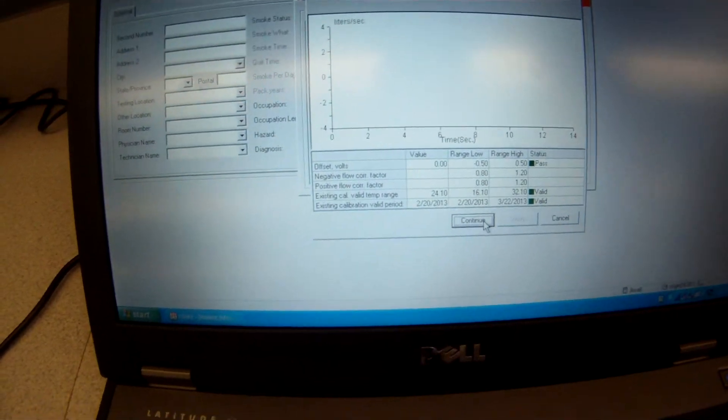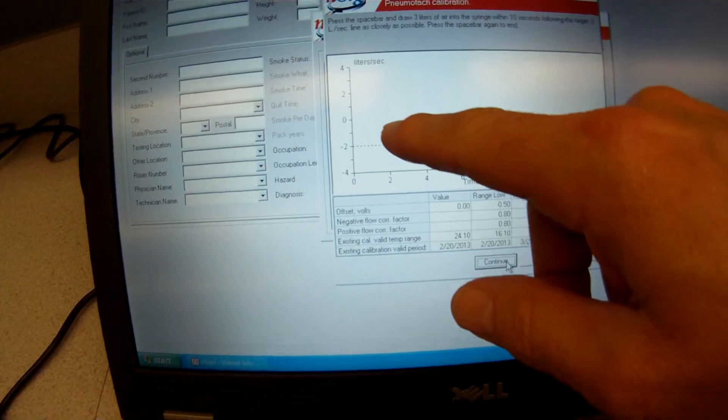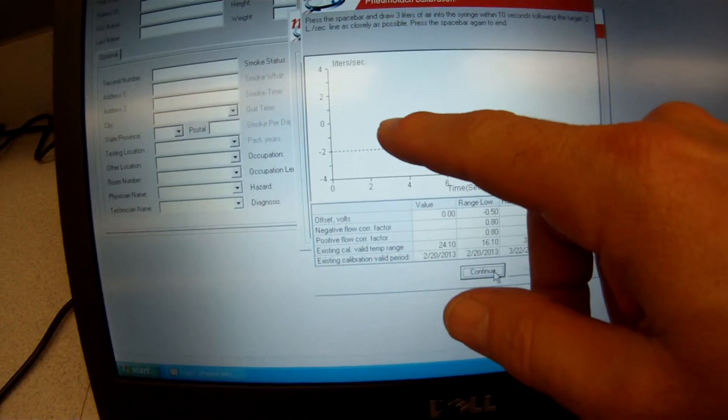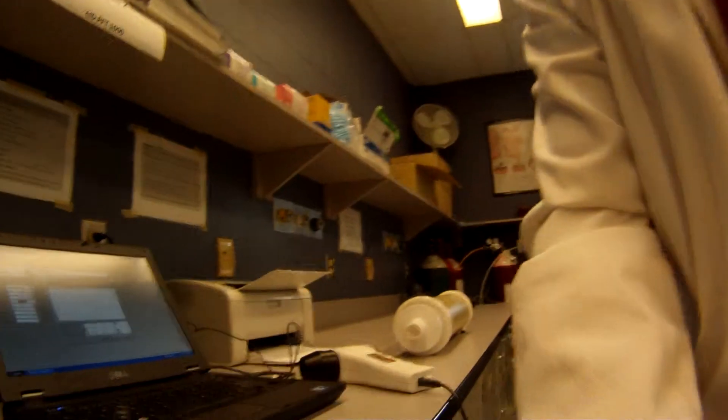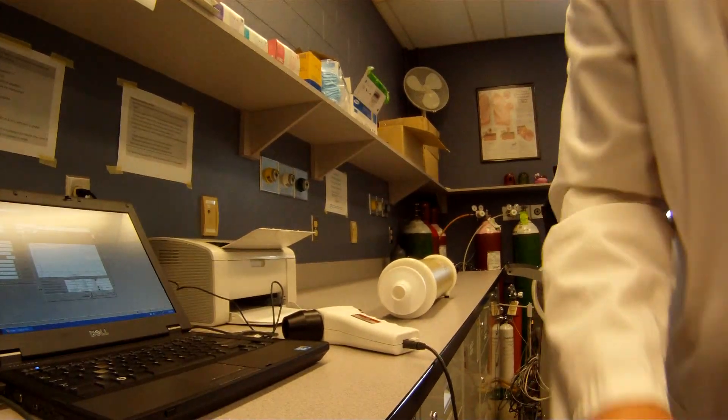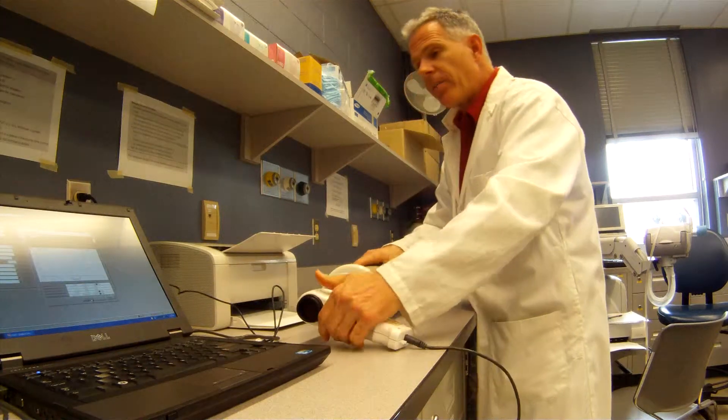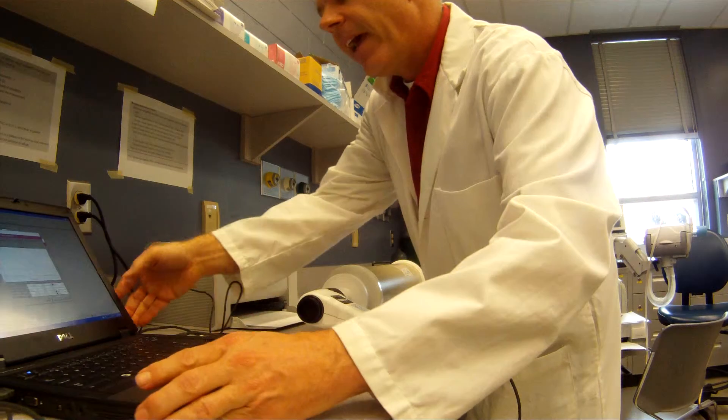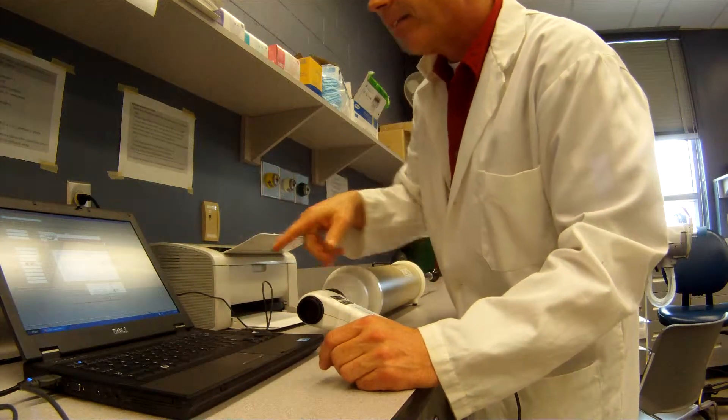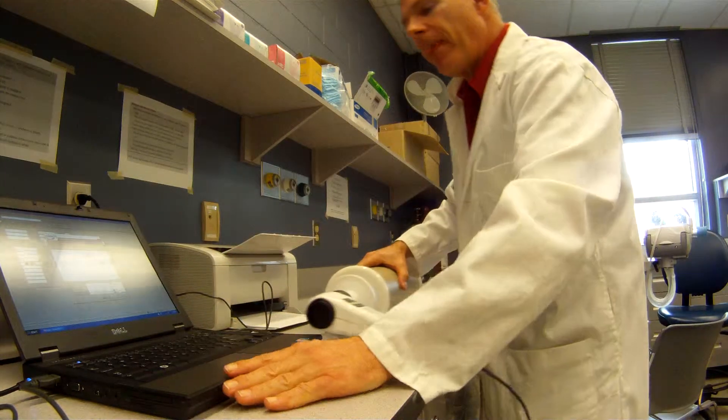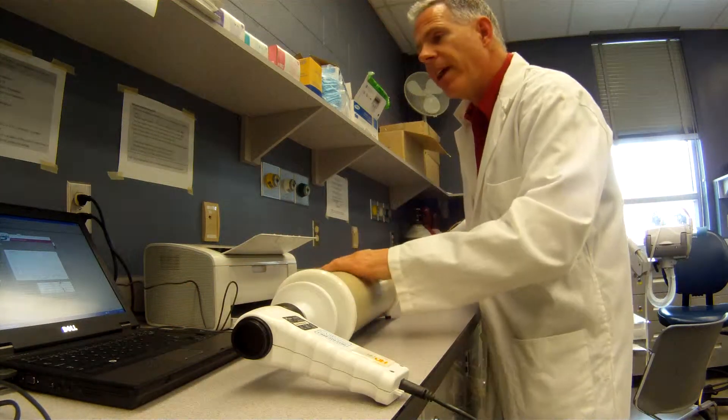It says offset measurement is complete. So now it gives us some targets on where we want to get that flow with our calibration. I'm just going to set this down here. The way this works is I'm going to hook this up to the calibration syringe and I'm going to watch my screen here to make sure that I can get that flow rate through my device. So I go continue.